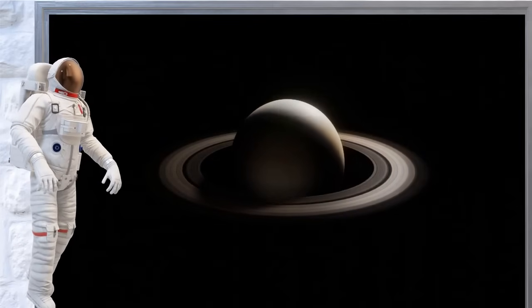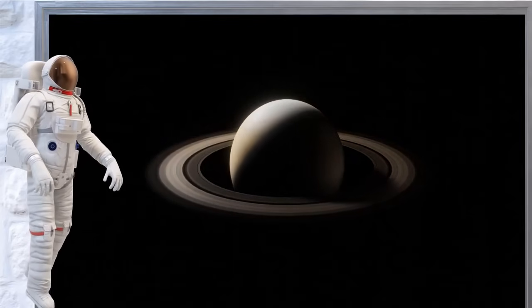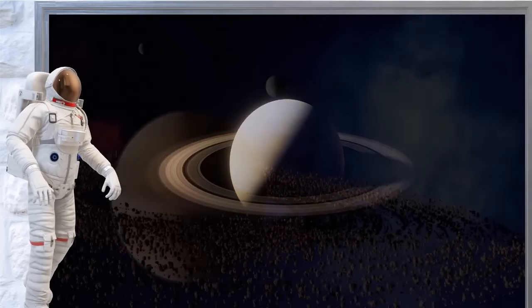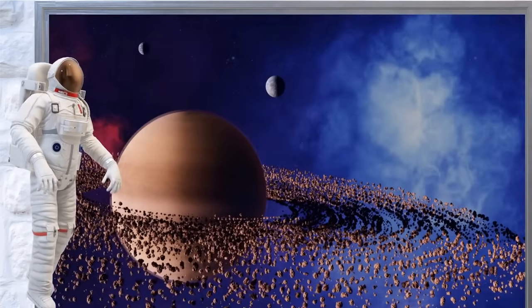Saturn, the sixth planet, is famous for its beautiful rings. The rings are made of ice and rock pieces and they circle around Saturn like a giant hula hoop.